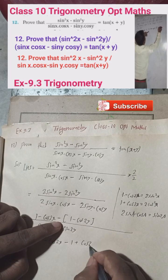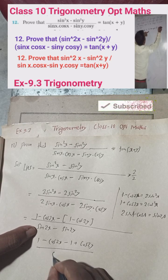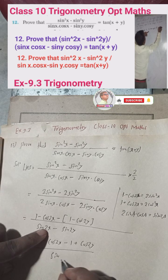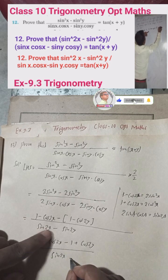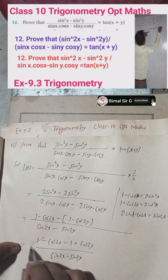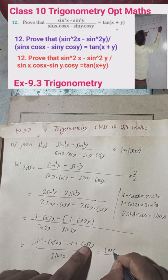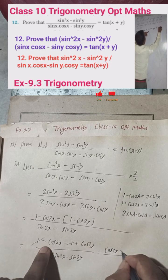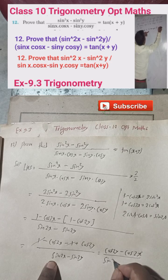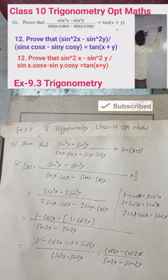The numerator becomes (1 − cos2x) − (1 − cos2y), which simplifies to 1 − cos2x − 1 + cos2y. The +1 and −1 cancel out, leaving us with cos2y − cos2x in the numerator, and sin2x − sin2y in the denominator.